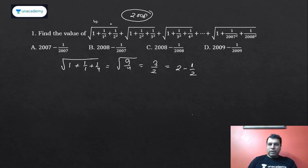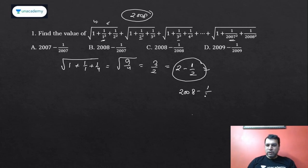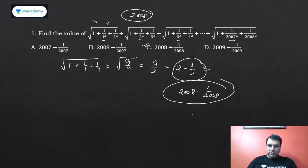So if there had been only one term, the sum would be 2 minus 1/2. The series starts with 1 and goes till 2007, so there are 2007 terms. If one term gives 2 minus 1/2, then 2007 terms should give 2008 minus 1/2008 — straight away you can find the answer. This is called generalization of the concept. If not fully convinced, let's verify with one more term.